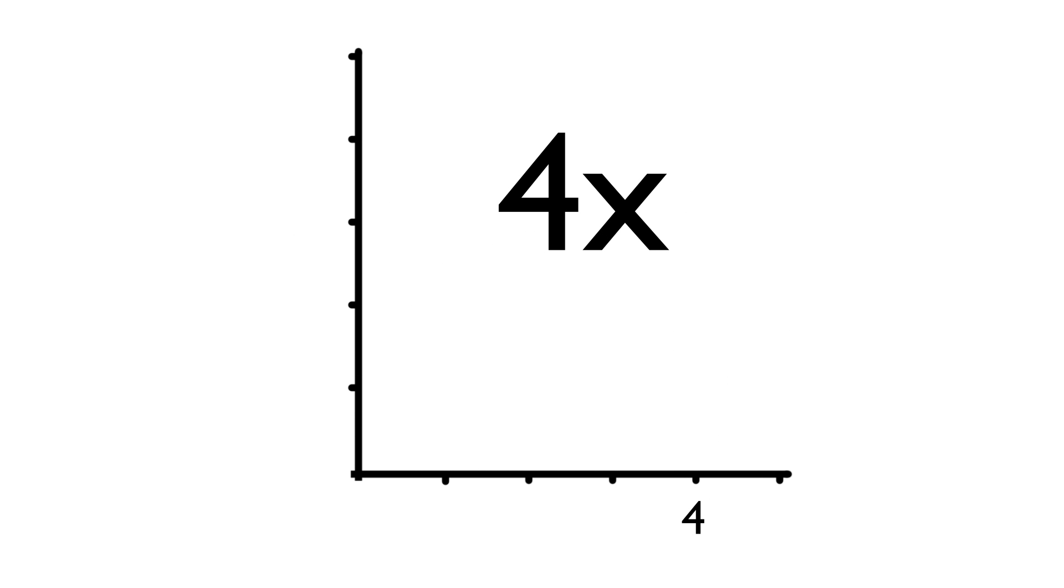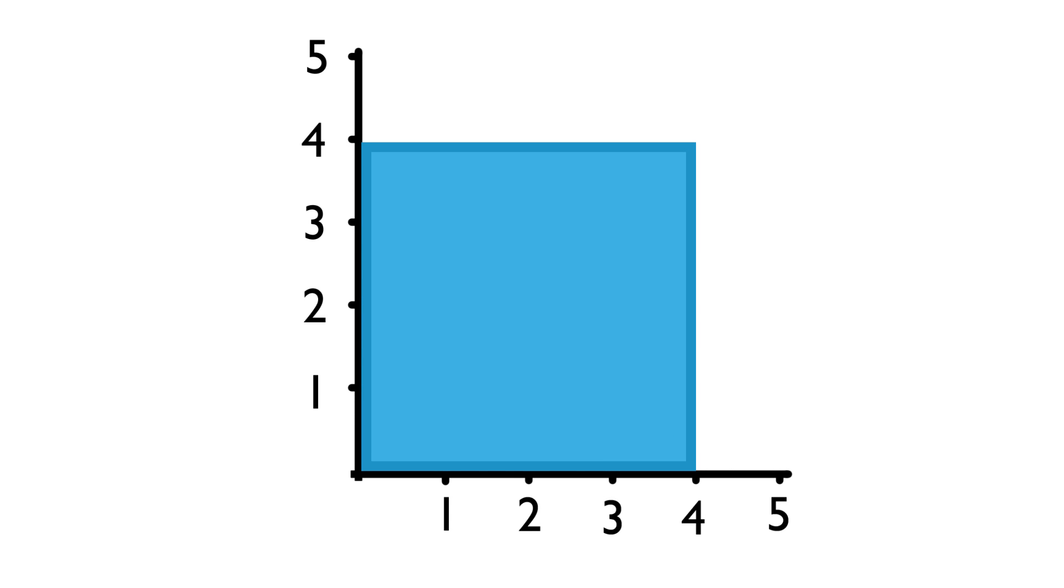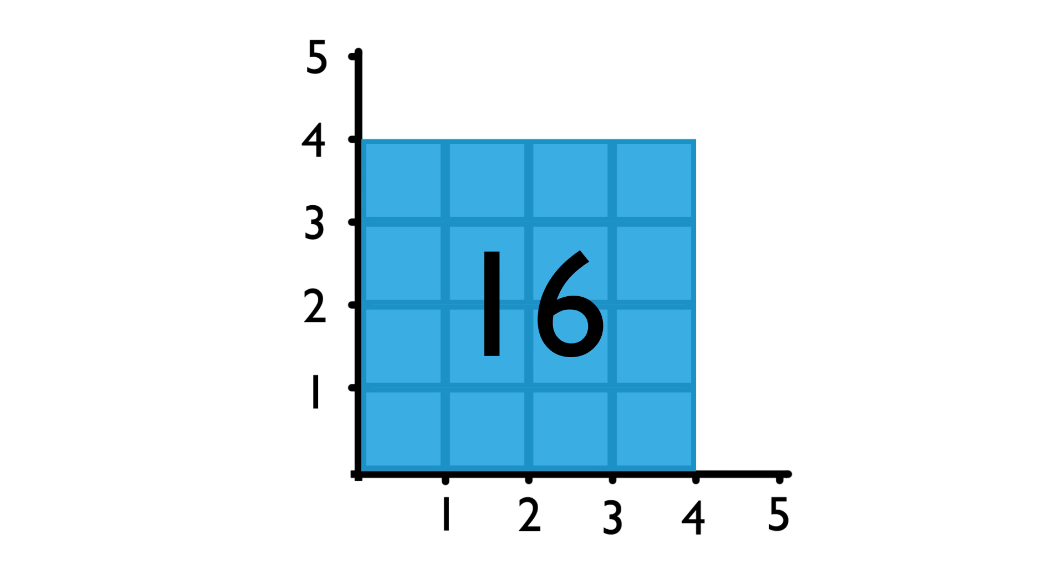Now, if you draw this on a graph and put the first 4 on the horizontal axis and the second 4 on the vertical axis, you actually get a square which has got an area of 16 because it's 4 times 4. So that's where the word square comes from in squared and square root.